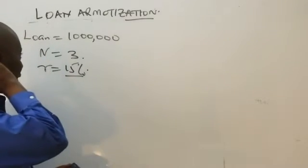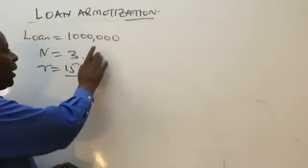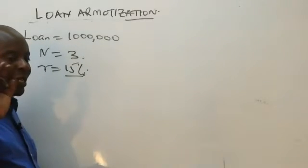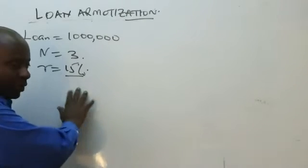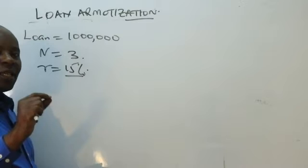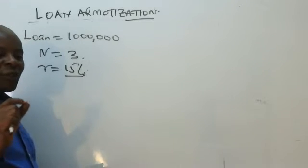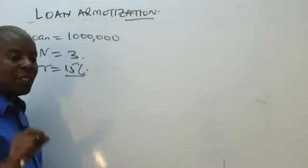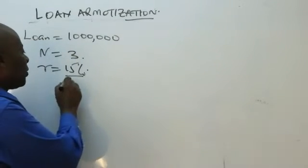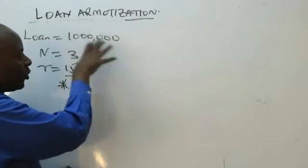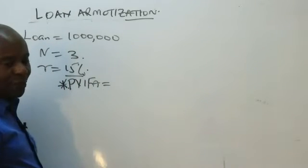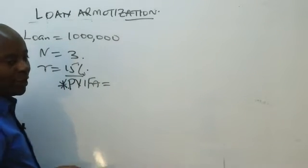I have a question here where they have given us the loan, which is a million borrowed, and then we have number of years are three, so they want us to pay in three equal installments, and then R is 15%. So remember this N of three years gives us three equal installments. The installments here will be annuities, and if it's annuities, then we have to use PVFA. The very first thing you need to do to come up with a loan amortization schedule is to find the PVFA. Whenever you hear of loan amortization schedule, there must be a PVFA.